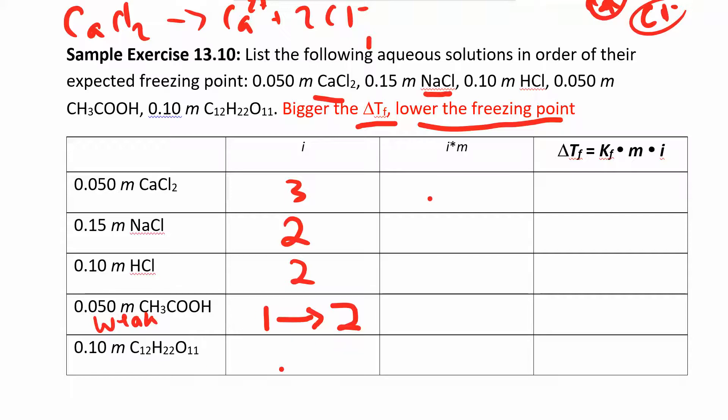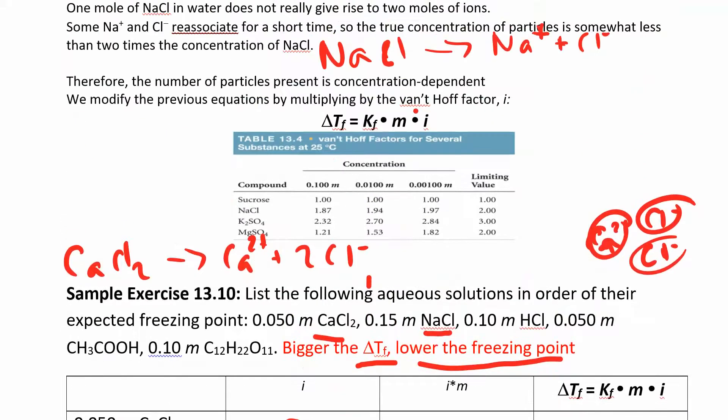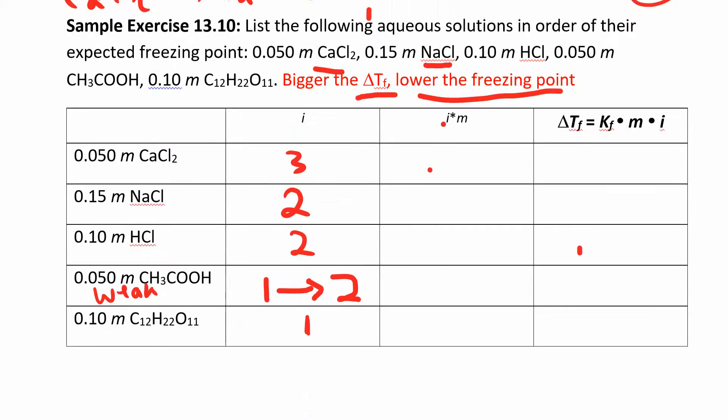And this last one is just sucrose. It's just a molecular compound. It's not going to dissociate at all. So the van't Hoff factor is just one. So if it's just one particle, if i was just one, that means it's a non-electrolyte. So our original equation works for non-electrolytes. The only thing we're doing now is adding on this van't Hoff factor for electrolytes.